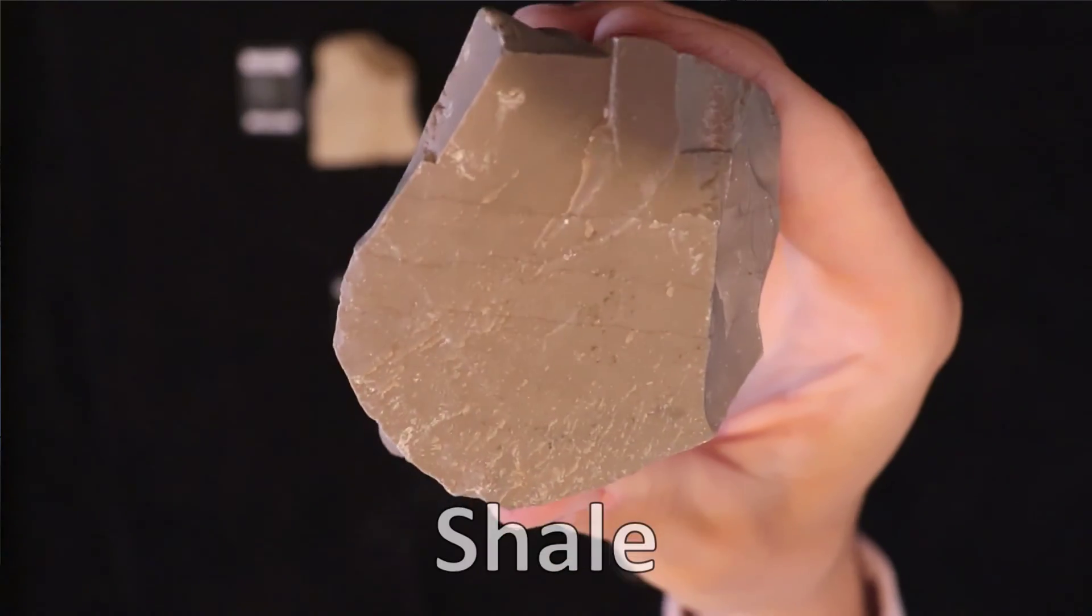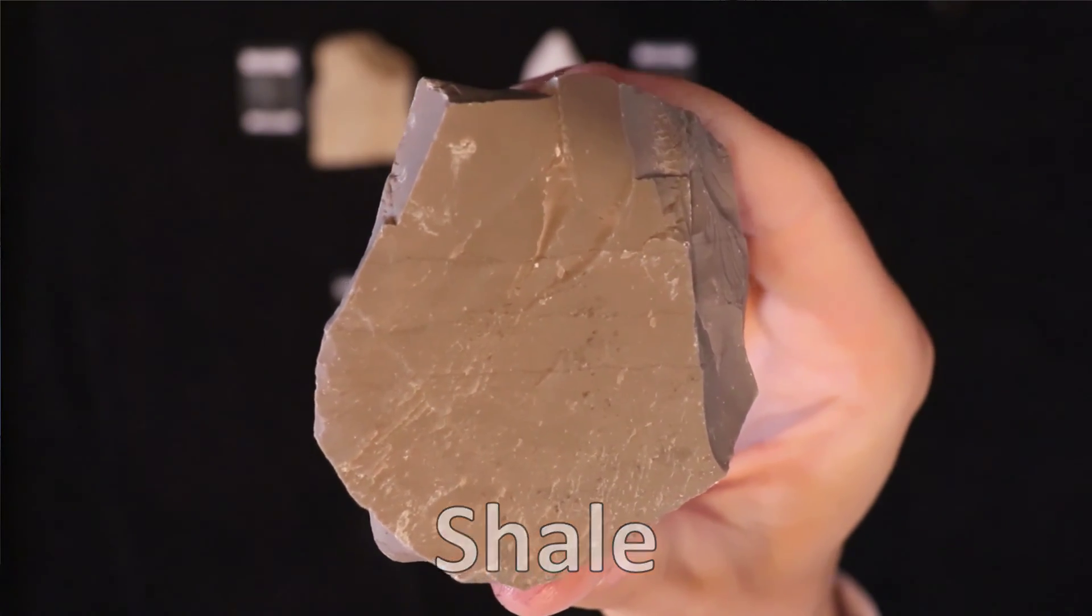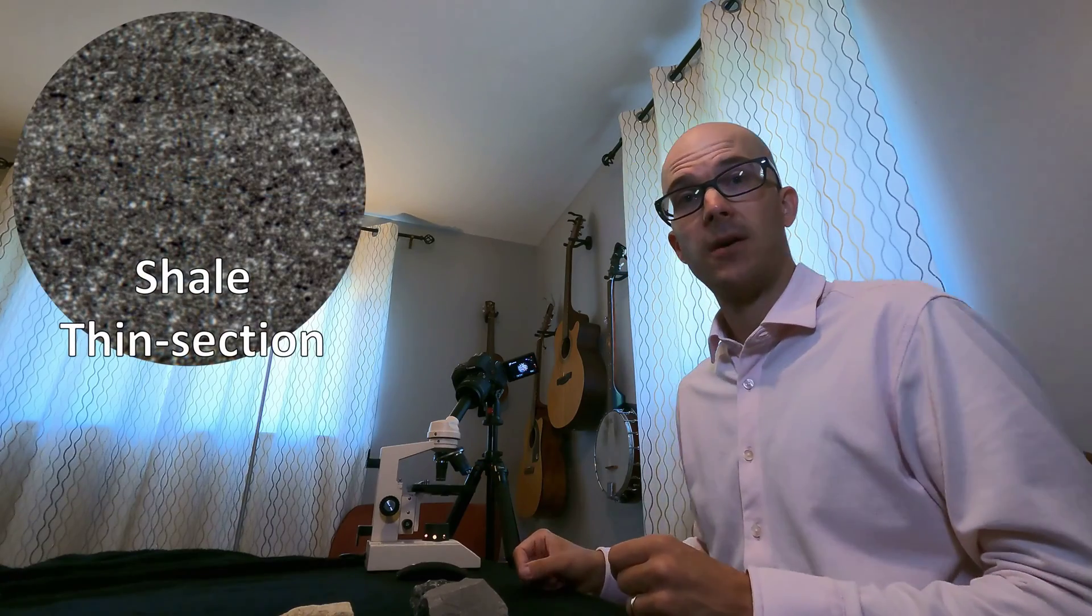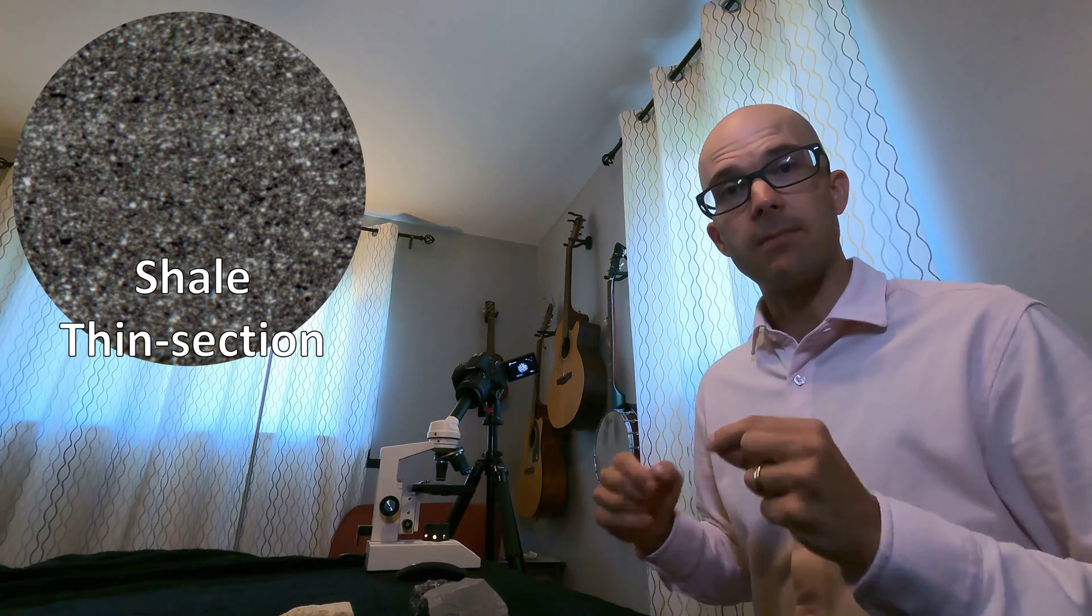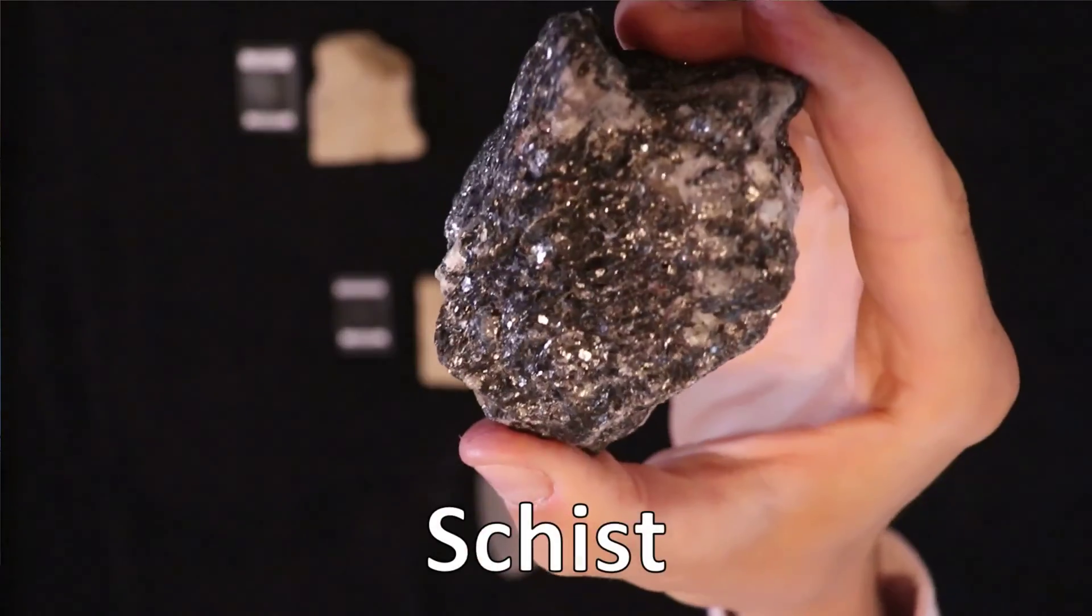Here's a third example. This is shale. Shale is a sedimentary rock formed from very fine particles of clay. Here's its thin section. Really, really tiny microscopic sedimentary particles. Now, believe it or not, you can turn shale into this rock,